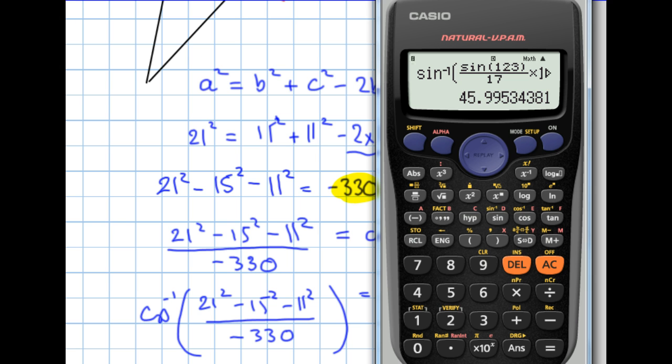So it's shift cos to the minus 1. The whole thing, the main thing is a fraction. So I'll put that there. And I've got 21 squared take away 15 squared take away 11 squared all over minus 330. Just make sure I close that bracket. And there we have 106.7 degrees.